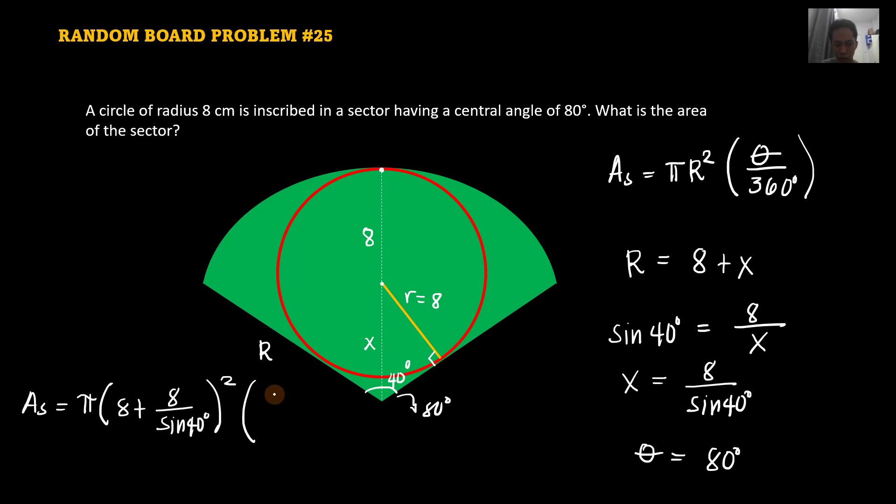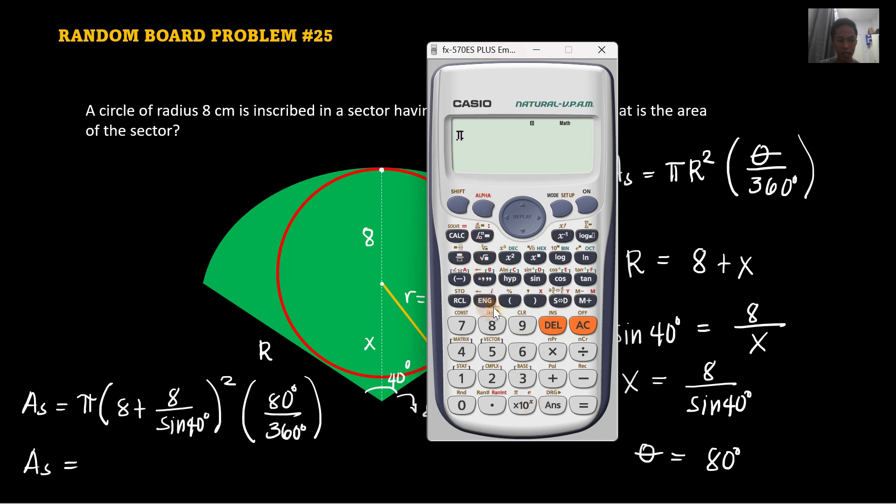So let's just input that to our calculator. And you can get the area of the sector. So we have pi shift, and then we have here times 8 plus 8 over sine 40 degrees. And we have squared for that. And then we have times. So let's just delete this. So we can just put here 80 over 360. 80 over 360. Equals. You have this one.